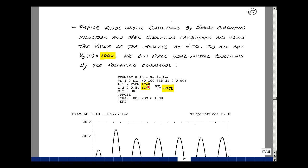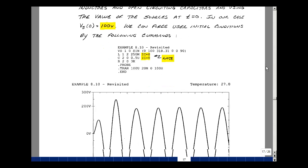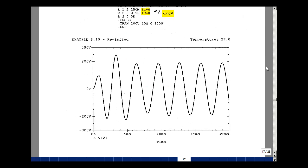But we can force the initial conditions using commands from ECE 201, saying IC equals zero for L and likewise for C, forcing zero initial conditions. We had a different result than Chapter 8, but this matches the curve on the previous page. We start with a transient response and eventually reach steady state.